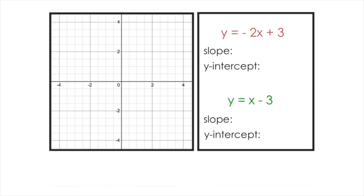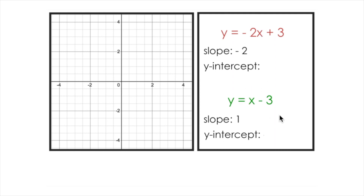This first example has two lines: y equals negative 2x plus 3 and y equals x minus 3. What I want to do first is identify what the slope and y-intercept of each of these lines are. These two lines are written in slope-intercept form, which helps me easily pick out a slope of negative 2 for the first line and a slope of 1 for the second line. Remember, if there's nothing written in front of an x, it's implied that there's a coefficient of 1.